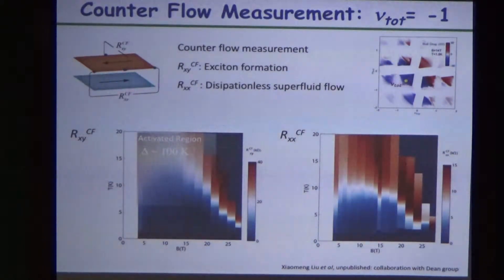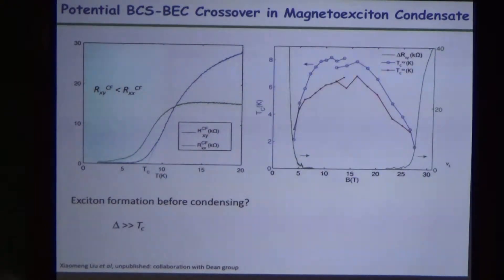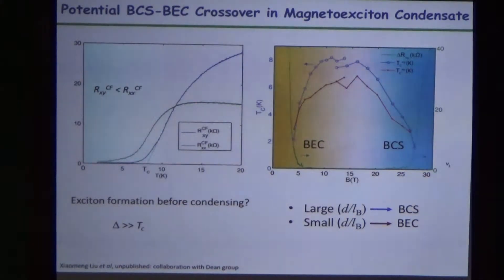In the finite density magnetoexciton condensation, nu total equal to one, you can measure both Rxx and Rxy of the counterflow geometry. To make the long story short, if you measure all the TCs here, you start to see the recovery of this dome-like shape of the condensation temperature, and clearly see that the BEC and BCS crossover can be realized into any of the magnetoexcitons we can create. It tells us we have good controls over that.